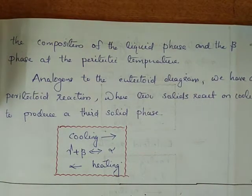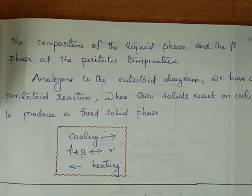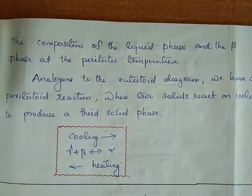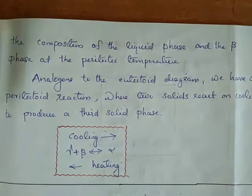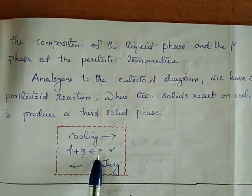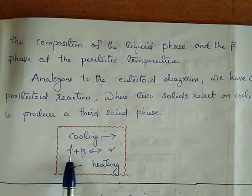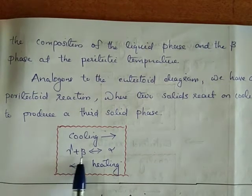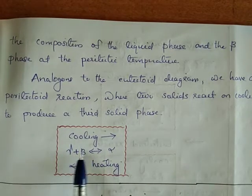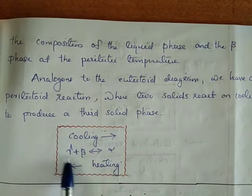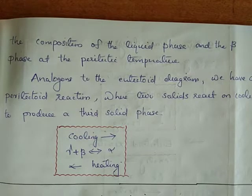A eutectic reaction corresponds to a eutectoid reaction, which involves a eutectoid diagram. Similarly, a peritectic reaction corresponds to a peritectoid reaction, which is defined by a peritectoid diagram. The peritectoid reaction is a solid-state analogous reaction: gamma plus beta gives alpha. The peritectic reaction is: L plus beta gives alpha.